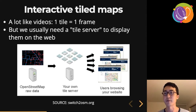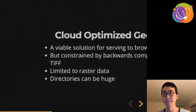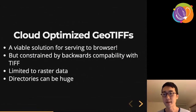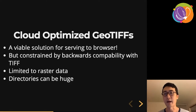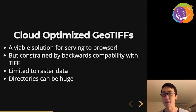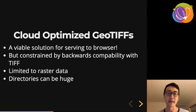There is an emerging technology called Cloud Optimized GeoTIFFs. In a lot of cases you're able to use a Cloud Optimized GeoTIFF and serve it directly to the browser. However, it is constrained by backwards compatibility with existing GeoTIFF readers, and it's limited to only raster data — so if you wanted vector or other kinds of data inside your tiles, those don't really fit the Cloud Optimized GeoTIFF format.